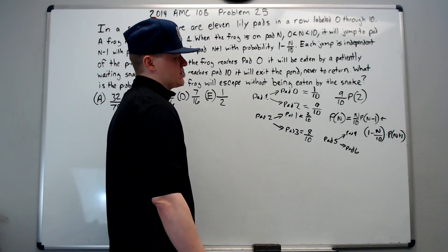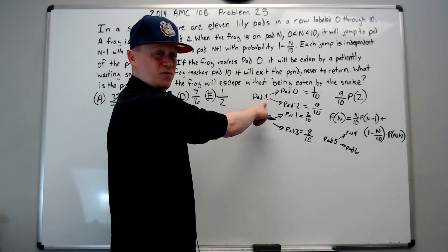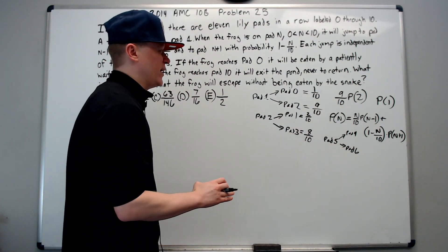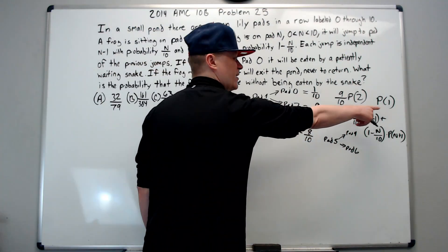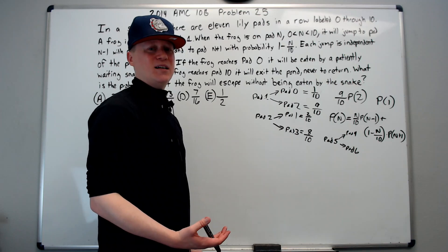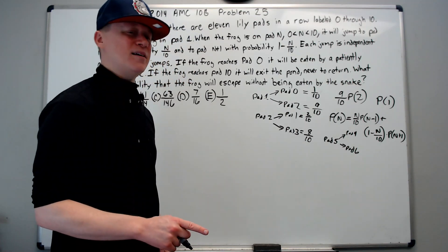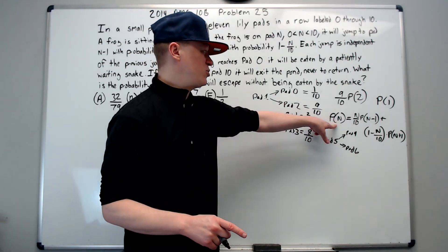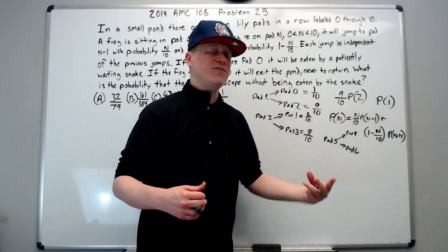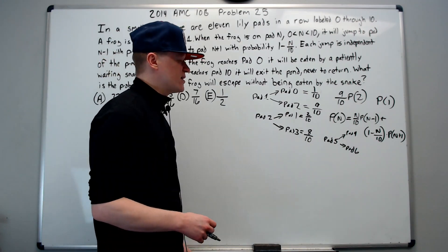What can we do with this? We're looking for P of 1 — the chance that he survives from pad 1. In order to get that, it would be nice if we could express things in terms of pad 5, because we know P of 5 is one half. This gives us our plan. You can pause the video here and see if you're able to solve the problem from here, then restart when you want to see how it goes.